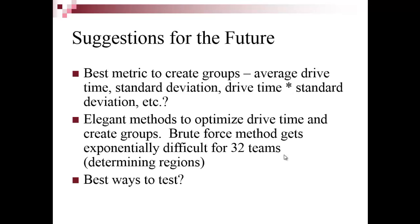For future work, several questions remain. First, I'm a GIS analyst, not a mathematician — what is the best metric for creating groups? Is it average drive time, standard deviation, drive time times standard deviation, or something else? Second, what are more elegant methods to optimize drive time and create groups? Brute force works for 16 by 16, but 32 by 32 — needed to determine east-west regions — is computationally infeasible. We may need to draw region boundaries along transportation corridors like I-95 or I-40. An early-exit loop condition might help. Third, what's the best inferential method to test these results?